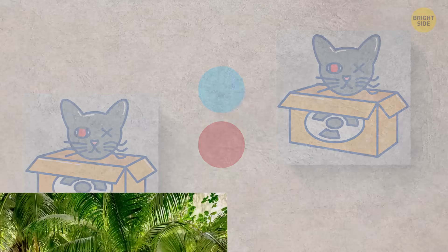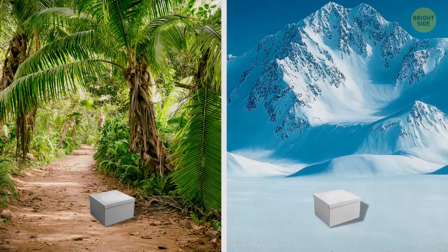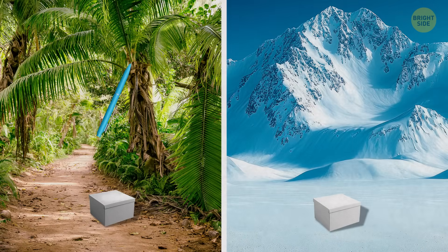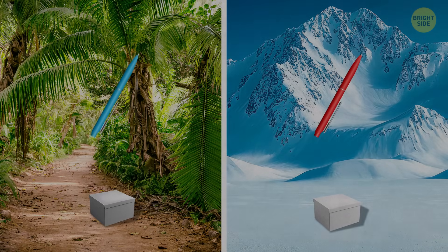Next, you pick up one box and take it to the Amazon jungle. You also send the second box to the top of Mount Everest. As soon as you open the box in the jungle and see the blue pen, it immediately becomes clear that the pen on Mount Everest is red. That's what happens to entangled particles.